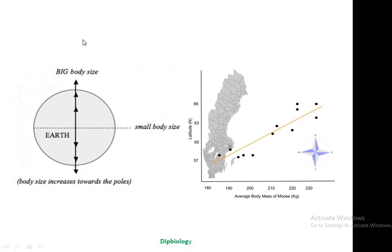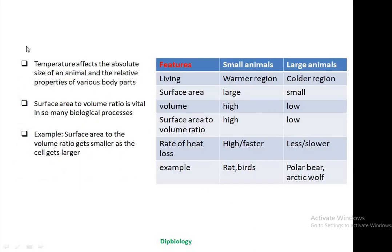The generalization of Bergmann's Rule is that big body size animals, particularly warm-blooded animals, remain in colder regions compared to the same groups or races living in shorter or warmer regions. Those animals remaining in colder regions have a bigger body size compared to those in warmer or hotter regions. Temperature is one of the most important abiotic factors that influences animal life in many ways. Temperature affects the absolute size of an animal and the relative proportions of various body parts. Surface area to volume ratio is vital in so many biological processes.